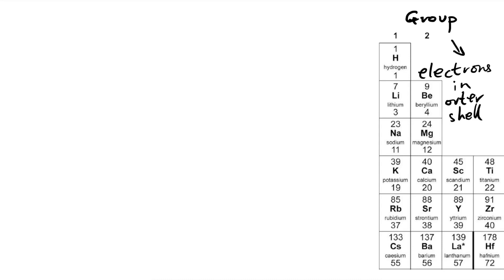So hydrogen has one electron in its outer shell because it's in group one, as does lithium, sodium, and potassium. Beryllium and magnesium and calcium have two electrons in their outer shell.